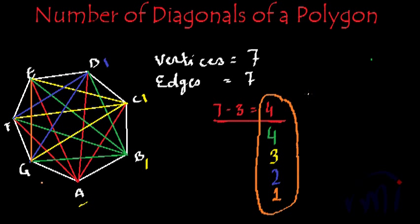So what is the total number of diagonals? 4 plus 4 is 8, plus 3 is 11, plus 2 is 13, plus 1 is 14. So the total number of unique diagonals possible in the case of a heptagon or the polygon of 7 vertices is 14. And now if I try to find the formula for the number of diagonals of a polygon of N vertices, how many diagonals will there be?